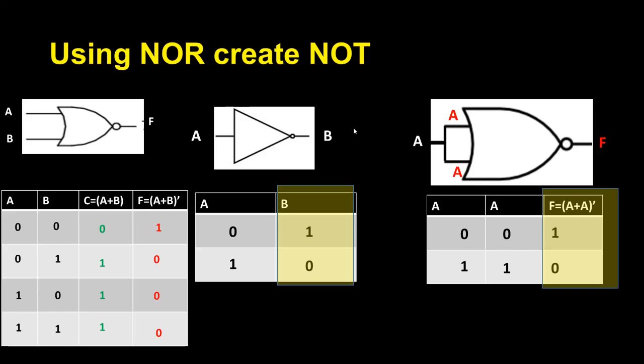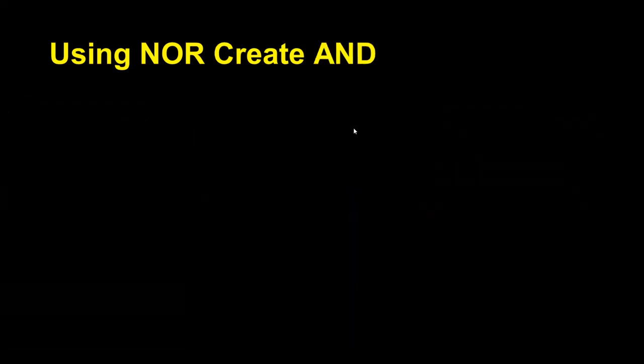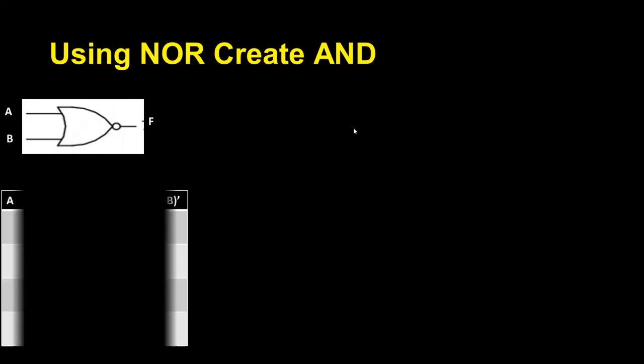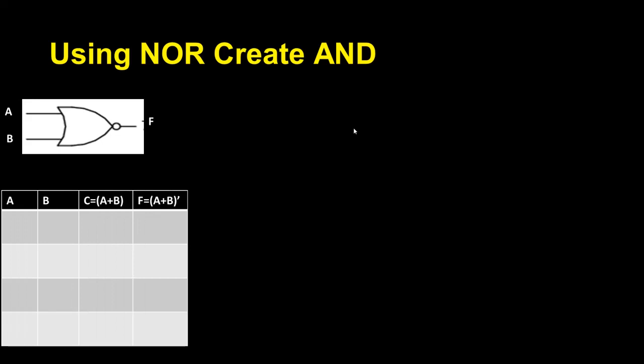You can see both outputs are the same, which means using a NOR gate I can create a NOT gate. Now, using a NOR gate I want to create an AND gate. This is my NOR gate with two input combinations.